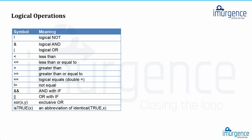The double ampersand `&&` is AND used with an if-statement, and the double pipe `||` is OR used with an if-statement. From the notion of vectors, it also relates to vector recycling. The double pipe `||` stands for OR with an if. Similarly, `&&` means you don't want vectors to recycle, while a single `&` means you do want vector recycling when vectors are not of equal size.